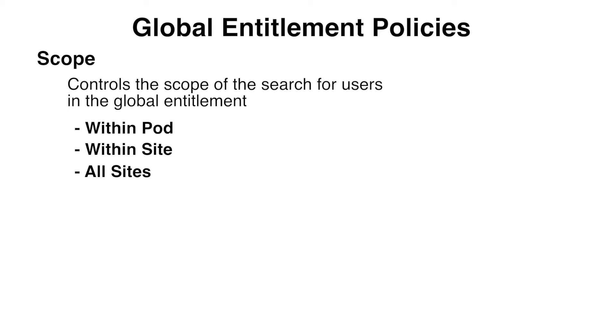For global entitlements that contain dedicated desktop pools, the scope policy affects where View looks for desktops only the first time a user requests a dedicated desktop.